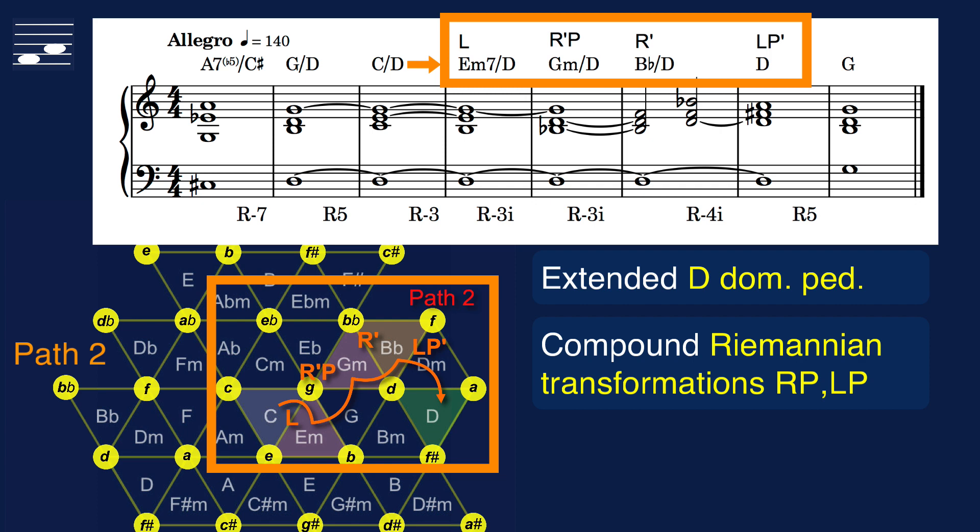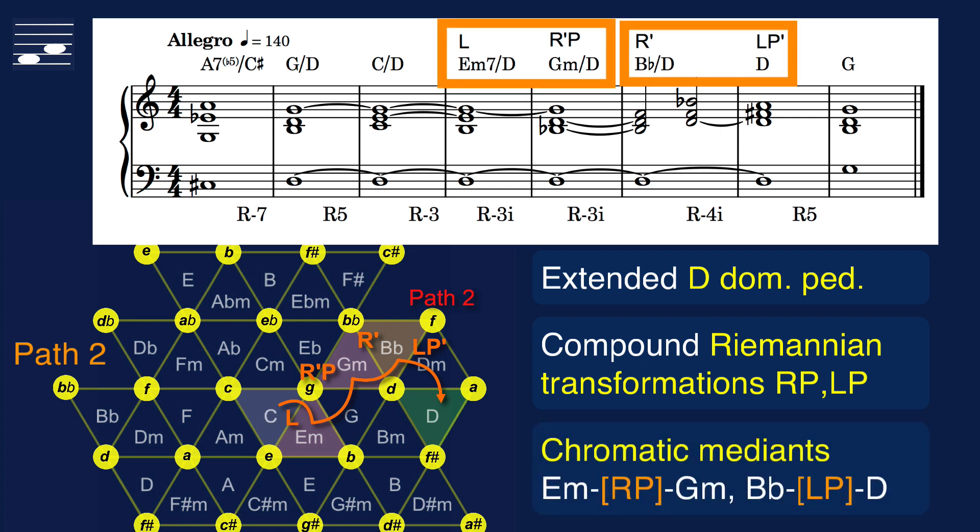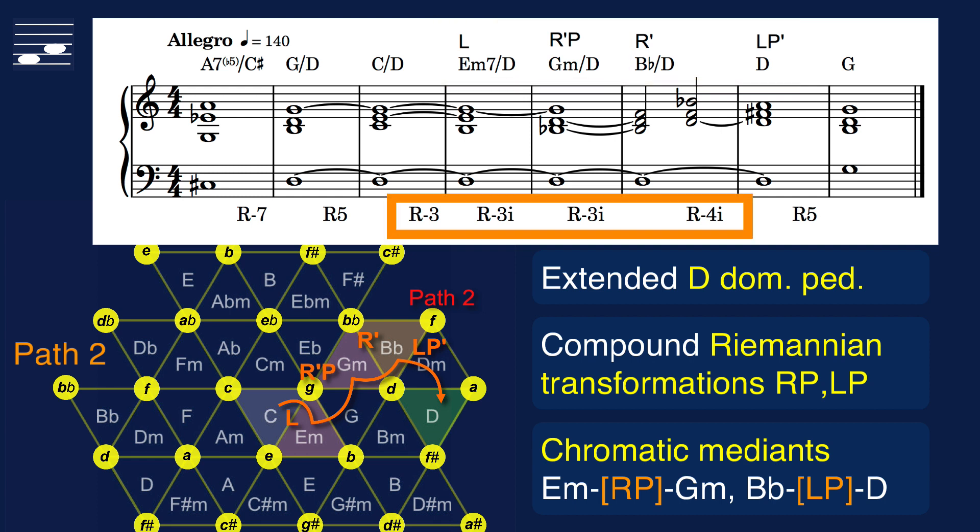The longer path now includes two compound Riemannian transformations RP and LP. The result is two pairs of chromatic medians, from Em to Gm and from Bb major to D major at the end. As you listen to this chord progression, note that still all Schillinger root cycles are negative. The chromatic medians correspond to the symmetric root cycles R-3i and R-4i.